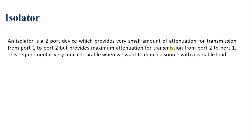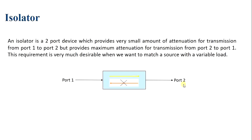Looking at the symbol: this is port 1 and port 2 of the isolator. The signal passes from port 1 to port 2 without any loss, but when it passes from port 2 to port 1, the signal is totally attenuated. This is shown in the symbol representation of the isolator.